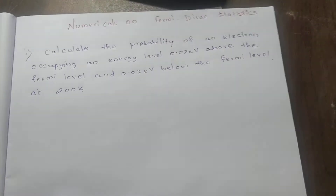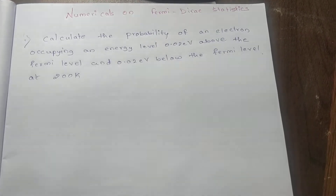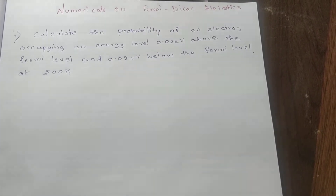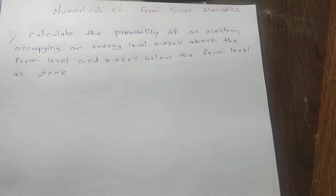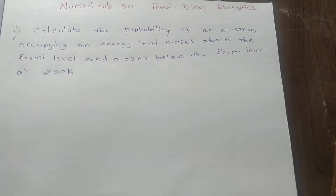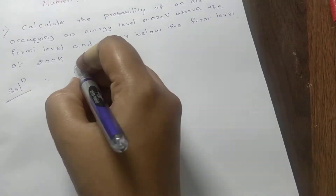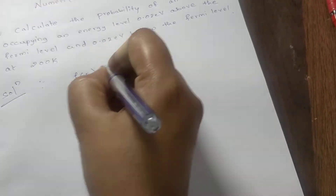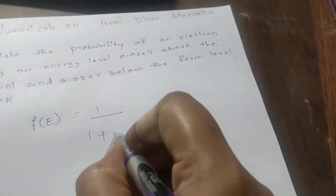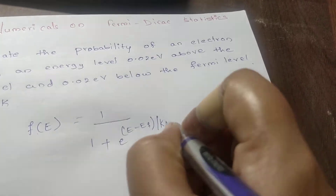Today we are solving the numericals on Fermi-Dirac statistics. The first numerical is: calculate the probability of an electron occupying an energy level 0.02 electron volt above the Fermi level and 0.02 electron volt below the Fermi level at 200 Kelvin. The Fermi-Dirac equation is: f(E) = 1 / (1 + e^((E - Ef) / kT)).